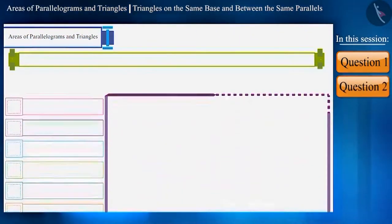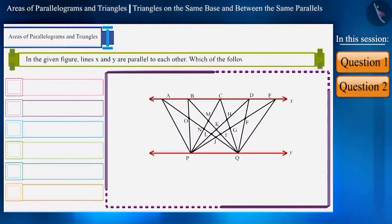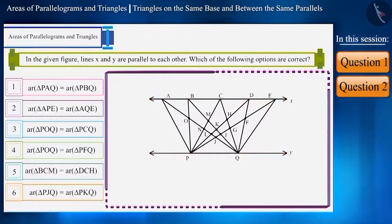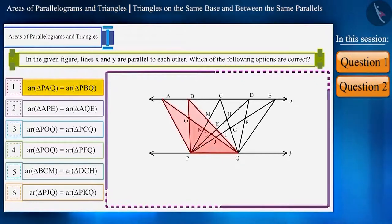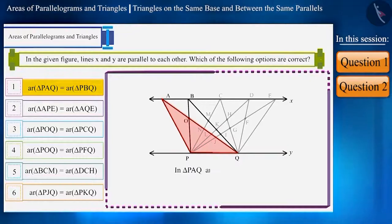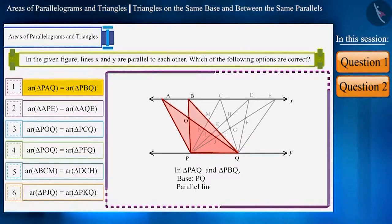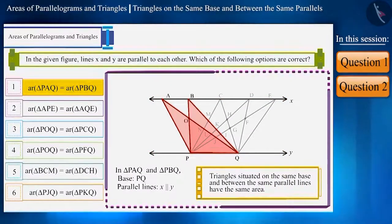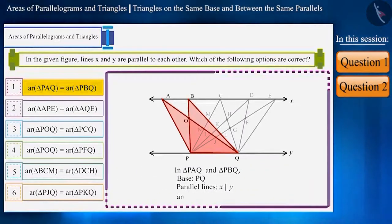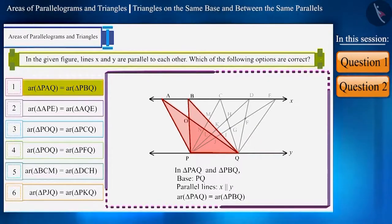Let's move to the next question. In the given figure, lines X and Y are parallel to each other. For the first option, triangle PAQ and triangle PBQ have a common base PQ, and they are situated between two parallel lines X and Y. Triangles on the same base and between the same parallel lines have the same area, so the area of triangles PAQ and PBQ will be equal. Therefore, the first option is correct.